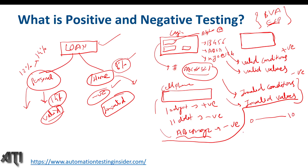For boundary value analysis with a range of 0 to 10, the boundary values are: at the lower boundary, minus 1, 0, and 1; at the upper boundary, 9, 10, and 11. Minus 1 is a negative test case and 11 is a negative test case — they should not be accepted. Zero and 1 are positive test cases at the lower boundary, and 9 and 10 are positive test cases at the upper boundary.